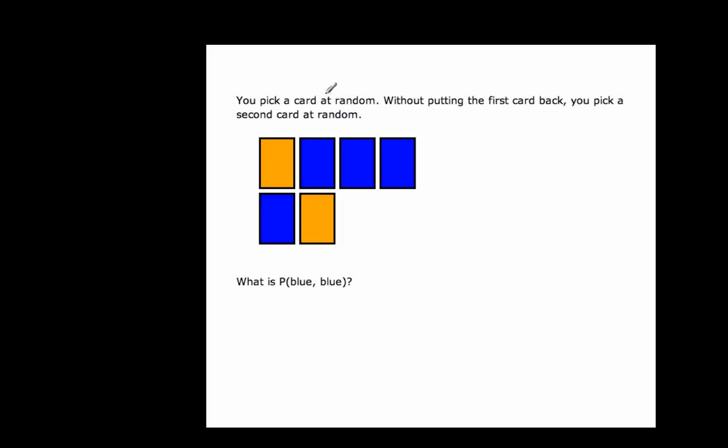You pick a card at random — random means all cards have an equal chance. Without putting the first card back, you pick a second card at random, so this is a dependent probability problem. The first event is picking the first card; the second event is picking the second card. The probability of picking blue on the first card: there are four blue cards out of six total, so four out of six chance of getting blue on the first card.